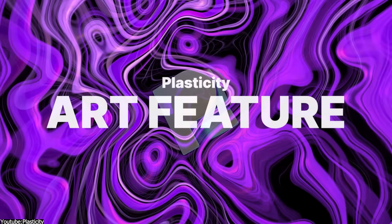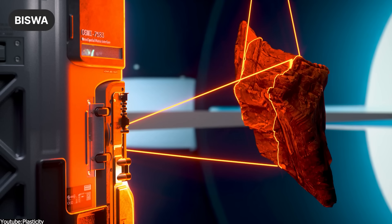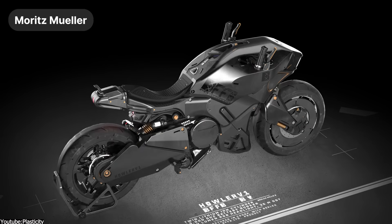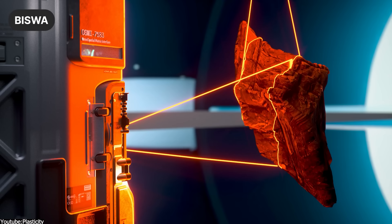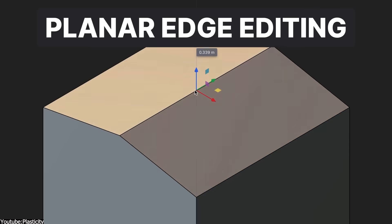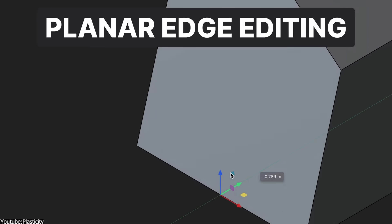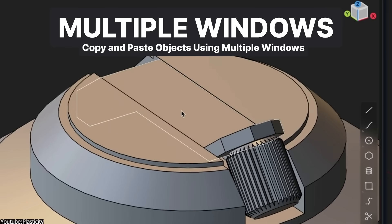Last but not least, we have Plasticity — a software that came out of nowhere to solve a long-lasting issue that kept 3D modelers on their toes for years. Officially released in 2023 by Nick Callen, a computer programmer and former systems engineer at Twitter, he succeeded at addressing a challenge that many dared to face and failed: making a CAD modeling software designed for 3D artists who create art rather than engineering or product design.